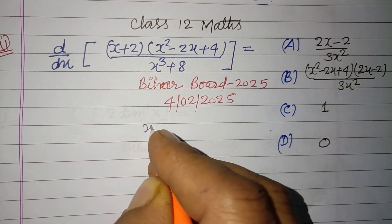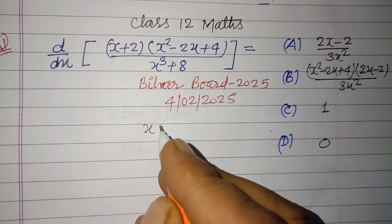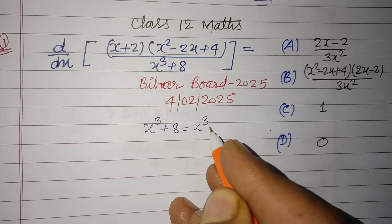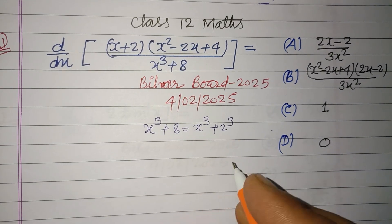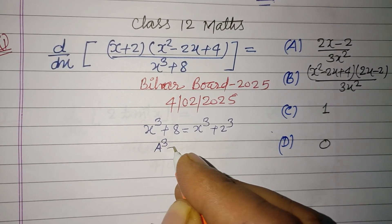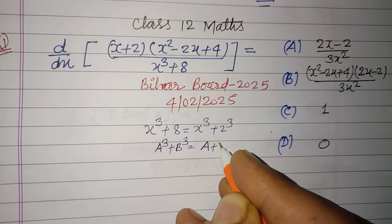Here we solve the given function. x³+8 can be written as x³+2³, and you know this formula that a³+b³ equals (a+b)